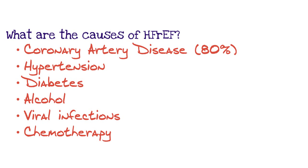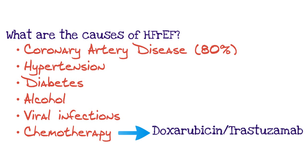And finally, chemotherapy. The classic chemotherapy agents that can lead to heart failure are: number one, doxorubicin, and two, trastuzumab. So keep that in mind and make sure to look at a patient's history if you're considering heart failure as one of their problems.